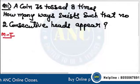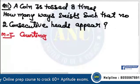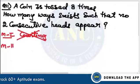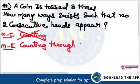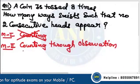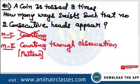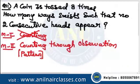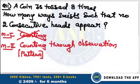One traditional method is counting. Method 2 is counting through observation. If you count through observation you will get a beautiful pattern hidden in this question. Keep your eyes and ears very clear and observe the pattern.